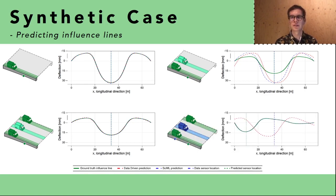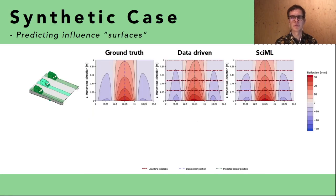If we want to predict an influence line at another sensor the SciML model is able to do this accurately. But for the data driven model this is not possible to do accurately at all. And if we then extrapolate to the case when we want to predict all the influence lines at the sensor or the influence surfaces, the data driven model can make an accurate prediction but the SciML model makes a very accurate prediction.